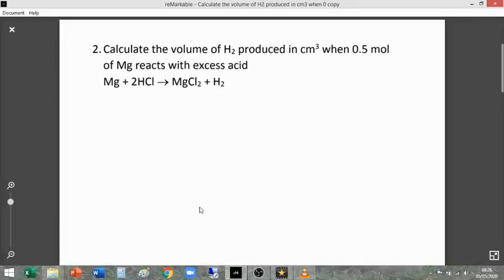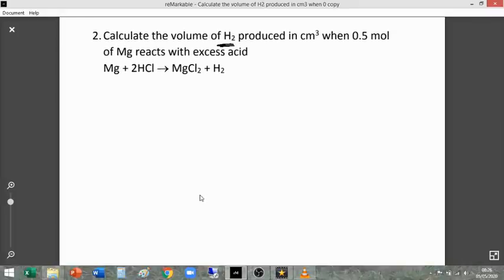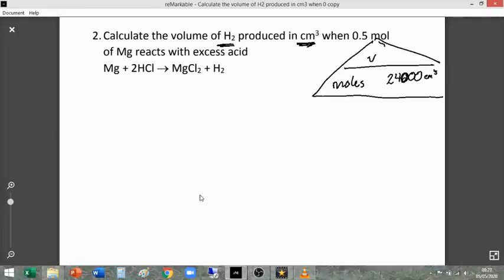So this wants us to find out the volume of hydrogen produced when 0.5 mol of magnesium is reacting. Okay, so here's my formula triangle, and because it's centimetre cubed we need 24,000 centimetre cubed here.